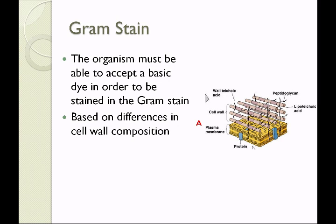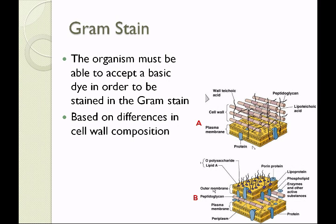The Gram stain is based on differences in cell wall composition. Gram-positive organisms have a very thick layer of peptidoglycan surrounding the plasma membrane, represented here by the purple tubes. Contrast that with the Gram-negative organism, which has a very thin layer of peptidoglycan and an outer membrane surrounding it. This outer membrane greatly influences how the two dyes in the Gram stain will stain the organism.